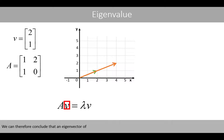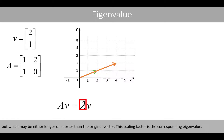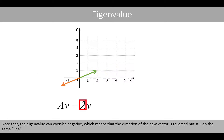We can therefore conclude that an eigenvector of matrix A results in a new vector that has the same direction as the original vector, but which might be either longer or shorter than the original vector. This scaling factor is the corresponding eigenvalue. Note that the eigenvalue can even be negative, which means that the direction of the new vector is reversed, but still on the same line.